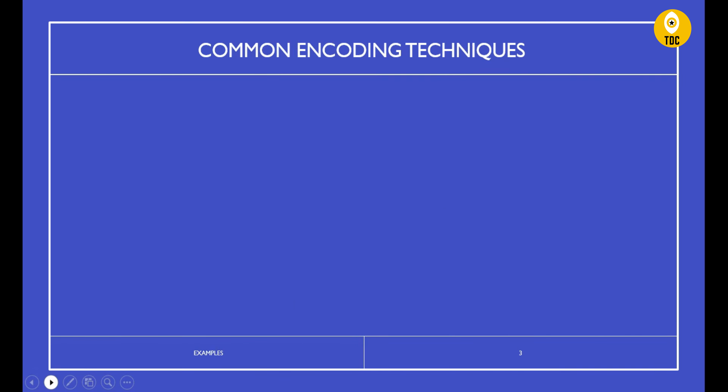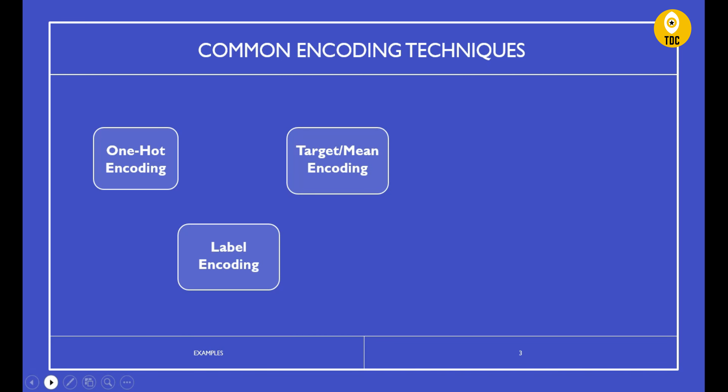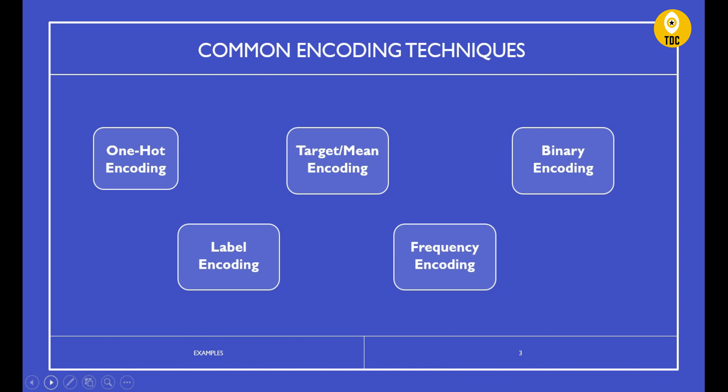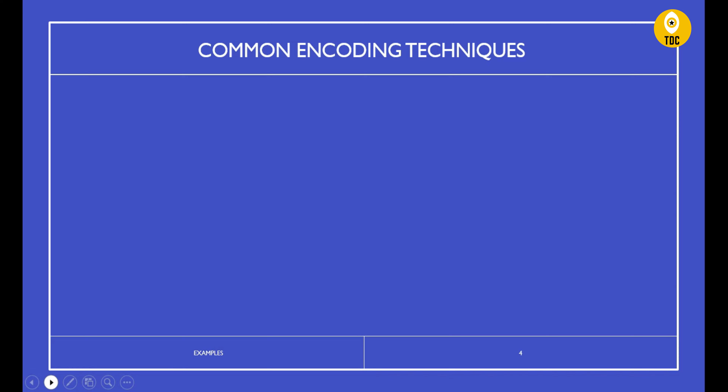In the next slide, we will discuss common encoding techniques. The techniques covered are: one-hot encoding, label encoding, target/mean encoding, frequency encoding, and binary encoding. When encoding a particular column, the choice of encoding depends on the type of data, the cardinality of the data, the algorithm you want to apply, and your specific use case and KPIs.